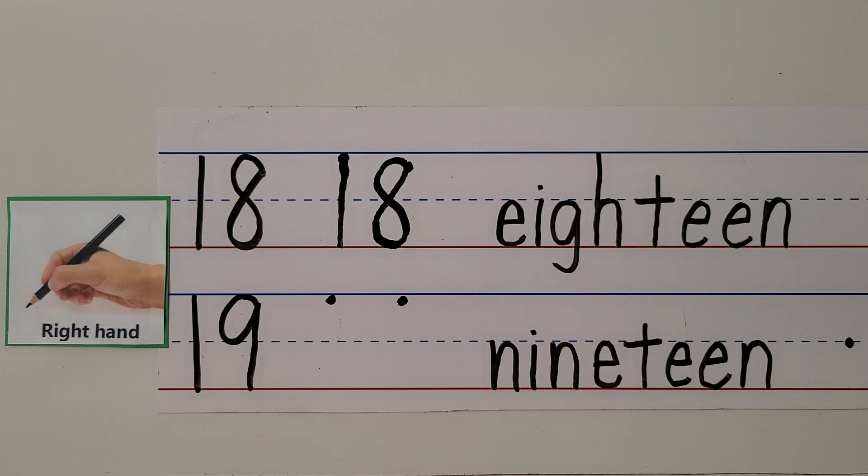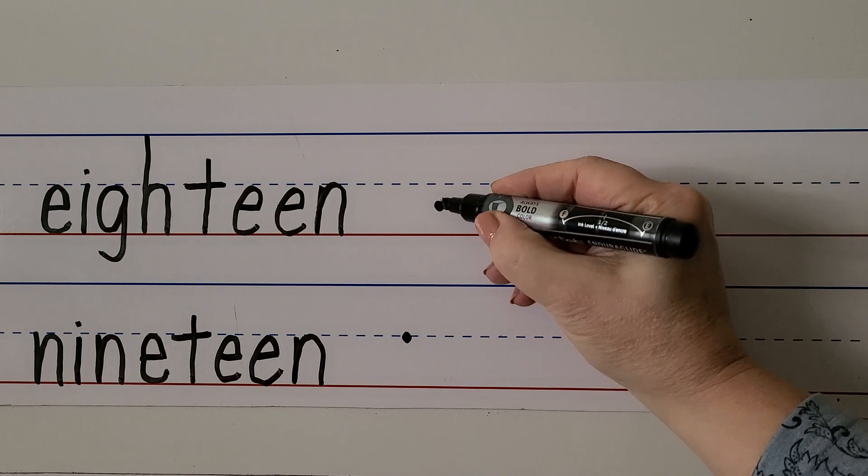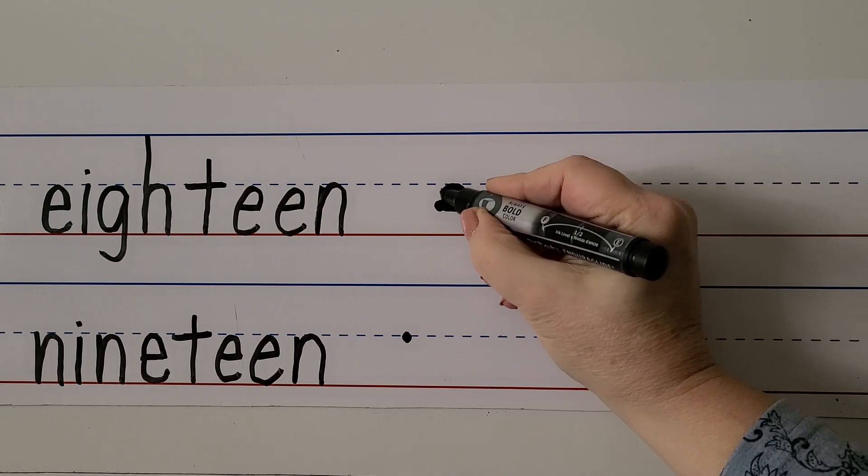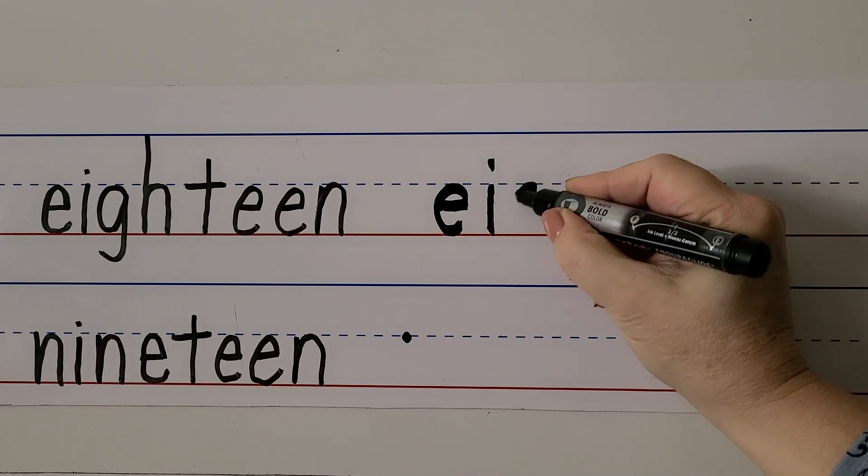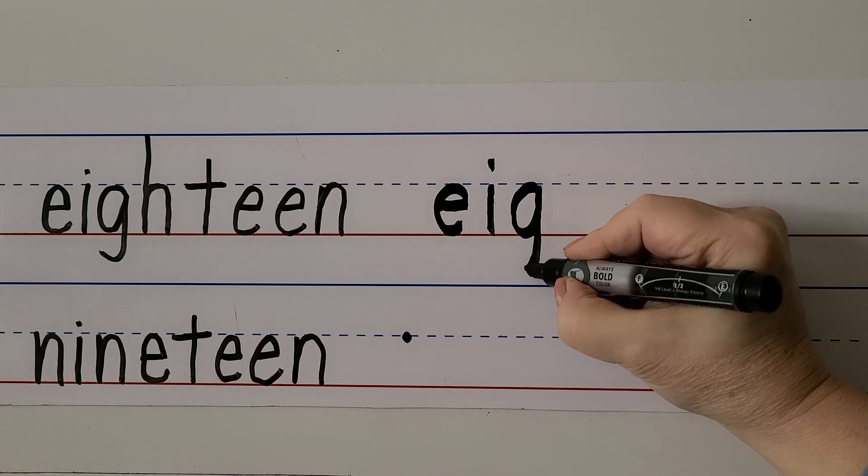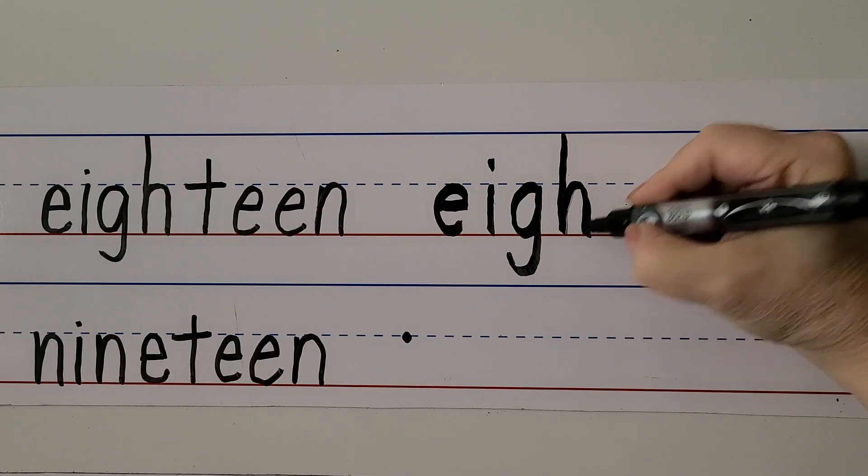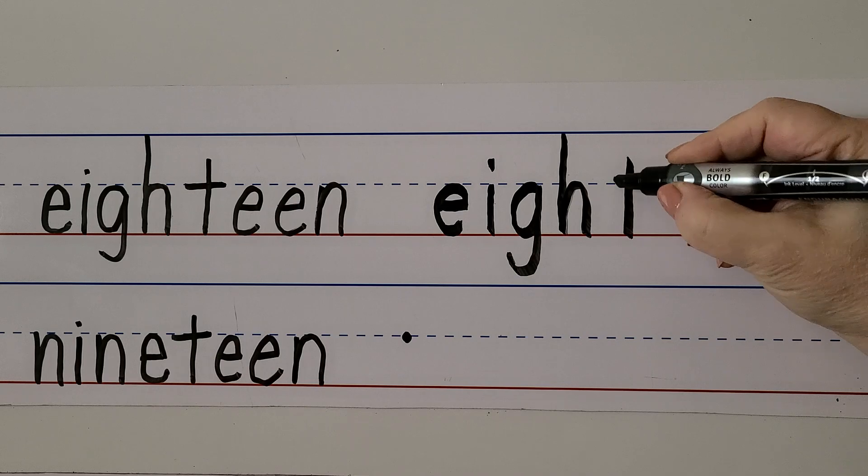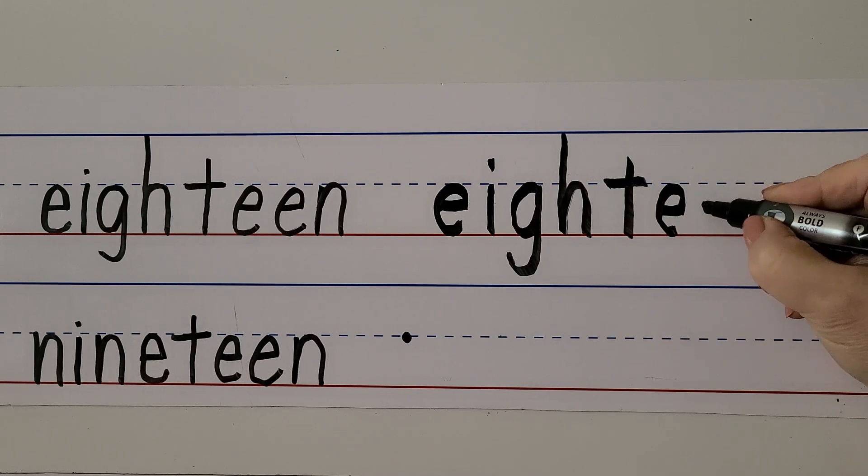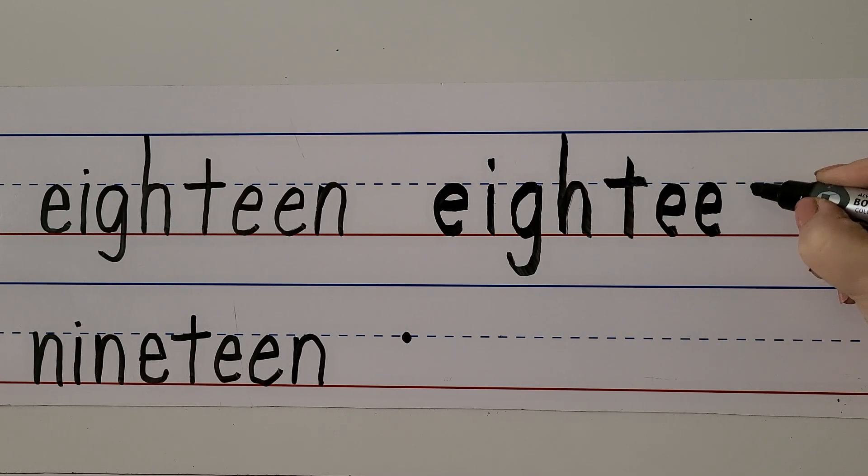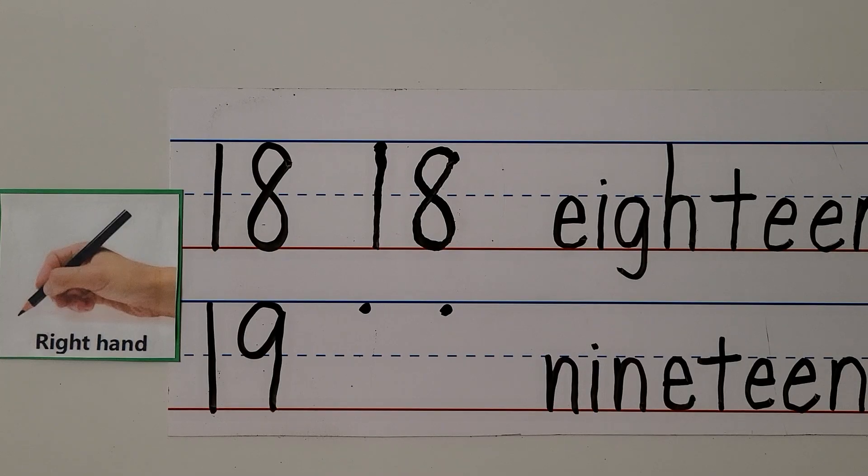We can write the word 18. We start by making our E right here: E-I-G. G goes into the basement, doesn't it? H. H-T, go on this side and we cross it towards our hand. E-E-N. Eighteen.